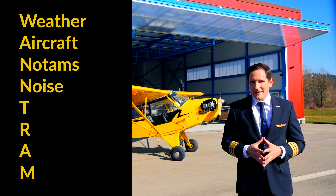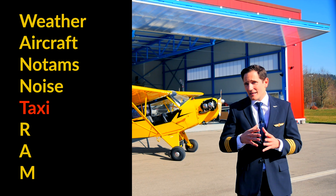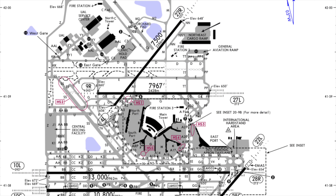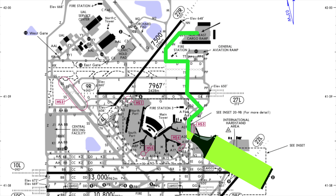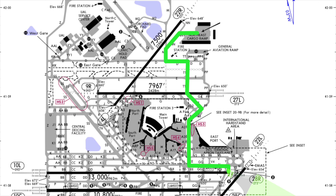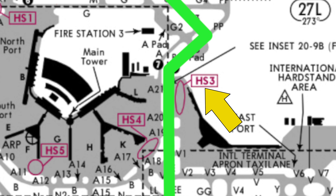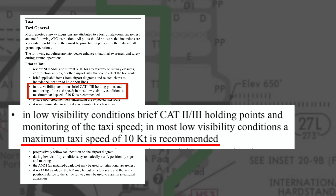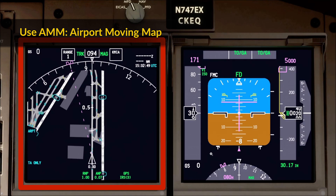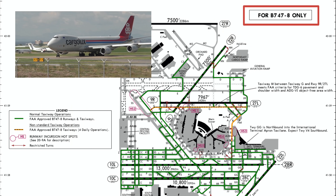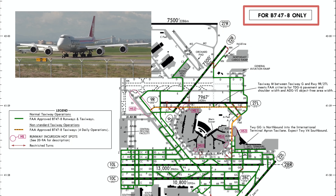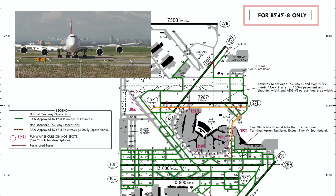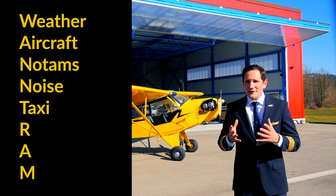Next up is the letter T for taxi. Brief your captain on the taxi routing. I recommend if you work with the Lido app, use the highlight function and draw out your taxi route to the expected runway holding point. Also point out taxiway hotspots and runway crossings, or during low visibility operations point out taxi speed limits. Again, be aware of which plane you're sitting in — your wingspan and taxi weight can be an issue, and therefore special taxi charts were put into place for the 747-8 or the Airbus A380.